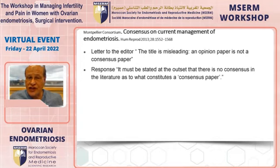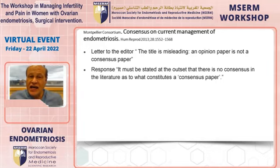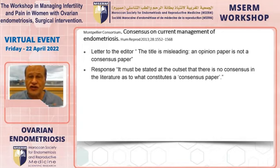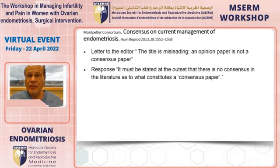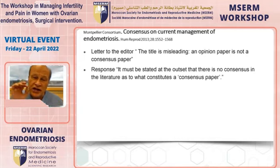Johnson and colleagues from the World Endometriosis Society published a consensus on current management of endometriosis in 2013. However, a letter to the editor criticized it, saying an opinion paper is not a consensus paper. The response was that there is no consensus on what constitutes a consensus paper. This highlights the difference between opinion and consensus in endometriosis surgery, where there is a lot of opinion and few randomized trials.